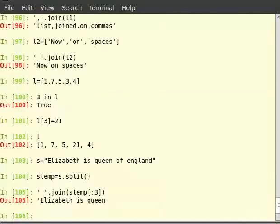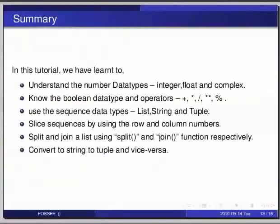This brings us to the end of the tutorial. In this tutorial we have learnt to understand the number data types integer, float, and complex; know the boolean data types and operators: plus, slash, percentage (modulo), and star for multiplication; use sequence data types list, strings, and tuple; slice sequences using row and column numbers; split and join a list using the split function and join function respectively; and convert strings to tuple and vice versa.